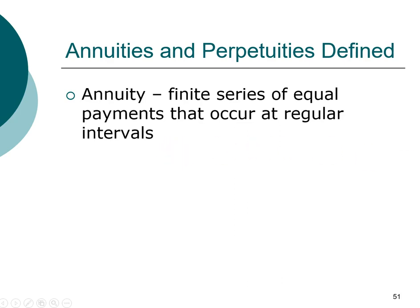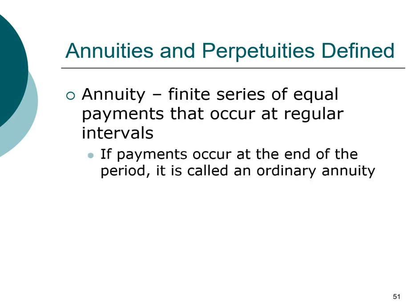Within annuities we can further classify into two types. If the payment occurs at the end of the period, it's called an ordinary annuity. In fact, if something is referred to simply as an annuity without the word 'ordinary,' you can assume that it is an ordinary annuity.